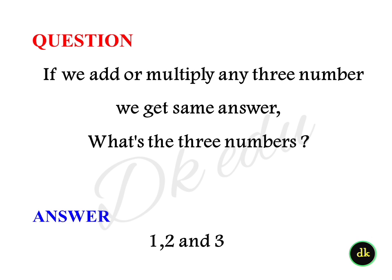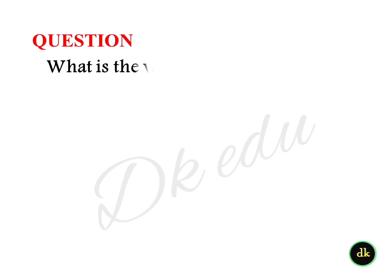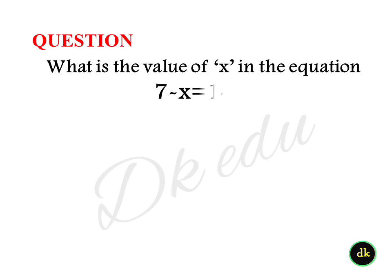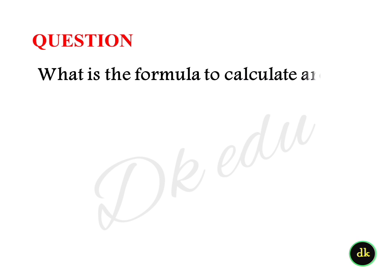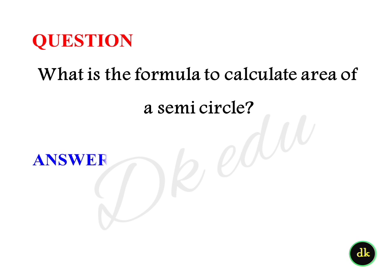What is the value of x in the equation where 7 minus x is equal to 0? Answer: 7. What is the formula to calculate the area of a semicircle? Answer: Pi r squared divided by 2.